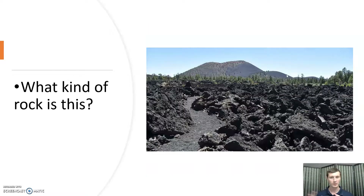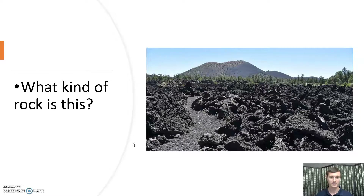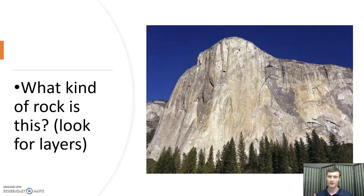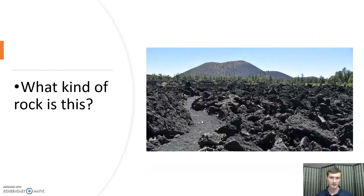What kind of rock are we looking at here? It doesn't look very much like anything we've seen so far, but this is an igneous rock — a different kind than what we saw before. The previous slide showed an igneous rock that cooled slowly over time deep underground. This one is a lava flow rock that cooled very, very quickly, taken somewhere near Flagstaff in Arizona.